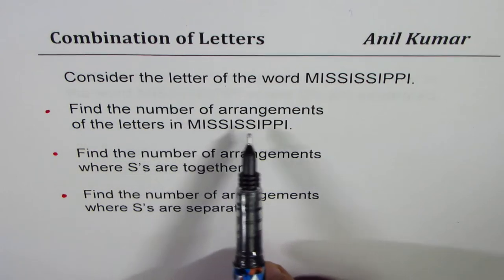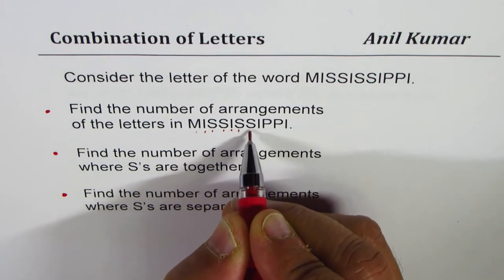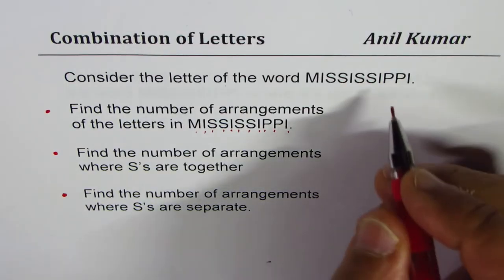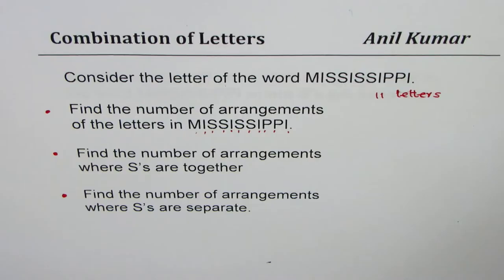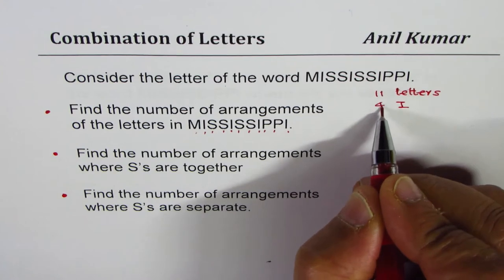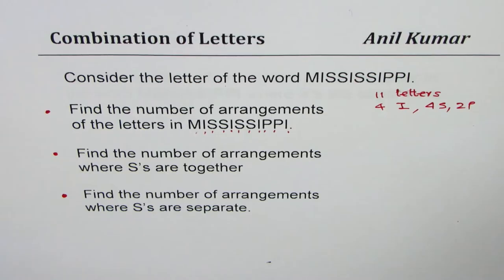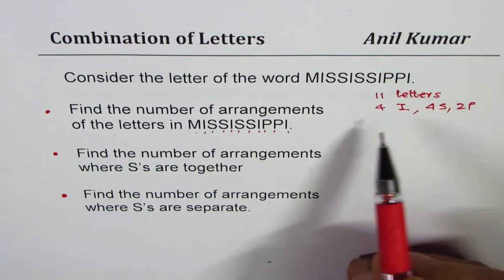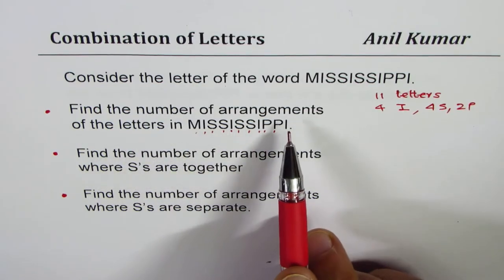The first question: find the number of arrangements of the letters in Mississippi. What we do is just count how many letters there are. In Mississippi, we have 11 letters. Then we look for letters that are repeated more than once. I's are repeated — there are 4 I's. Then S — we have 4 S's. And we have 2 P's. So: 11 letters, 4 I's, 4 S's, and 2 P's.